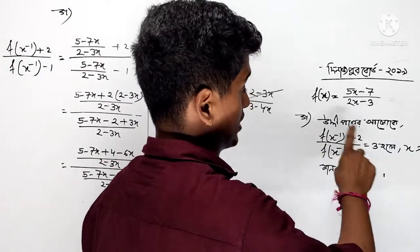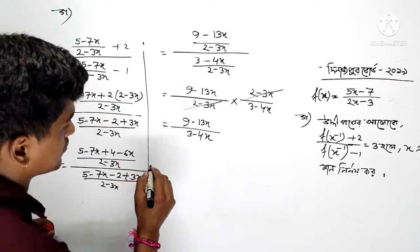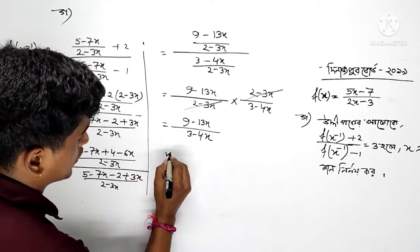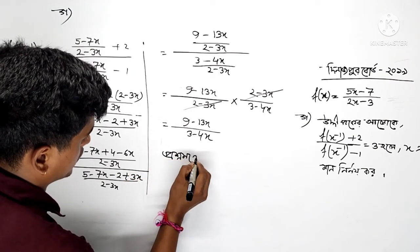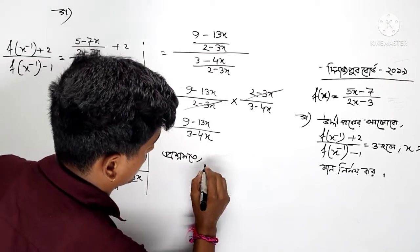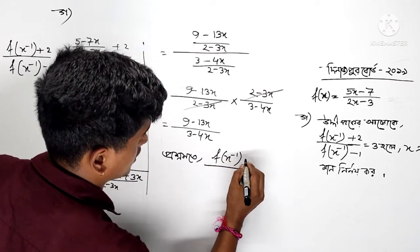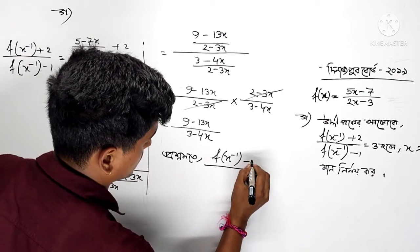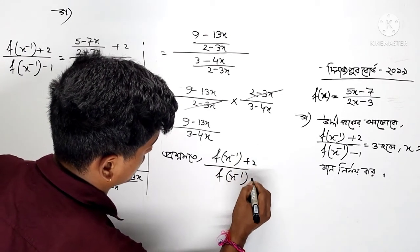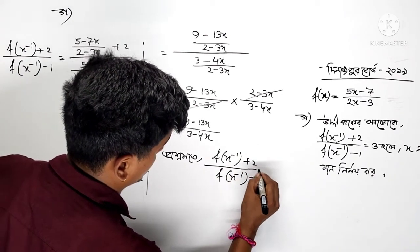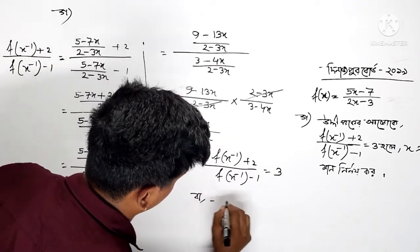That means one per this. Then the function X to the power minus 1 plus 2, again function X to the power minus 1, minus 1 equal to 3 2 2 2 1.